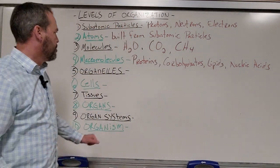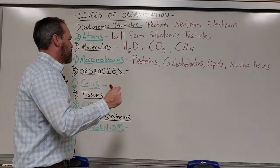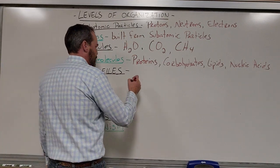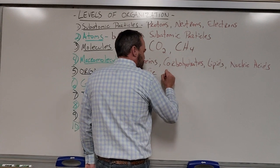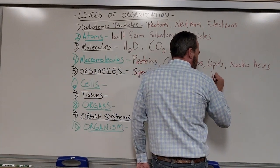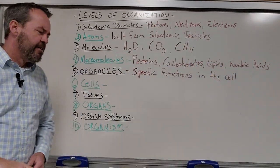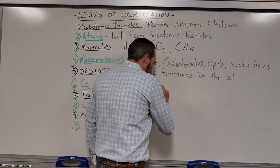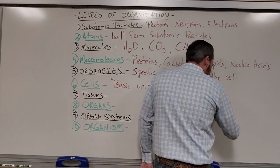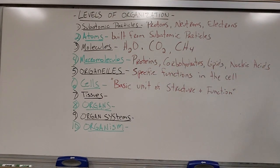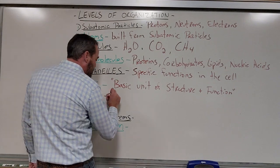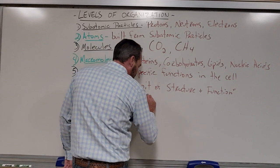Then we've got organelles. Organelles are little particles that have a specific function within the cell. We've got lots of different organelles and they all have a very specific job to do inside the cell. Which gets us down to the cell itself. A cell is defined as the basic unit of structure and function — here we're putting anatomy and physiology together. Tissues are just layers of cells working together, essentially.